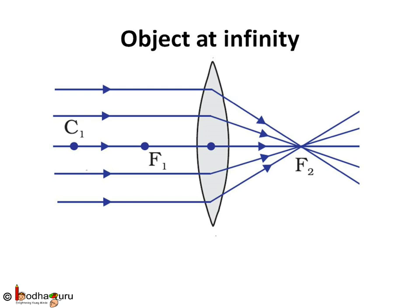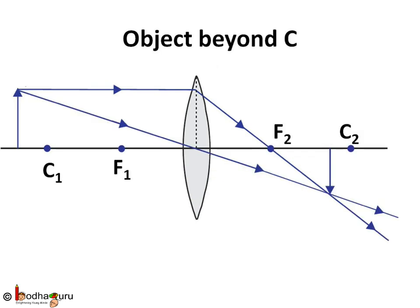Why parallel to principal axis? Because the object is at infinity. So in this case, we get a real, inverted, highly diminished image like a point on the other side of the lens at focal point F2.